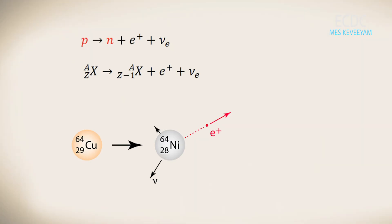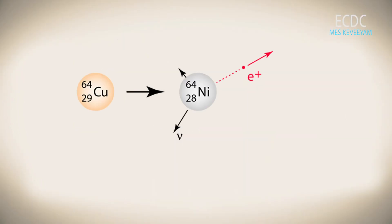Thus, the nuclide transforms to a new nuclide. For example, copper-64 transforms to nickel-64 with the emission of a positron. Gamma decay: